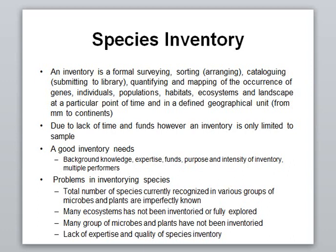There are certain problems you can face while doing inventory. The total number of species currently recognized is incomplete because many groups of microbes and plants are imperfectly known — you may not know a plant's genetic makeup, its proper distribution, or exactly what its population is. There are also many ecosystems which have not been fully explored, and since an ecosystem involves many interacting components, fully understanding one is a laborious job.